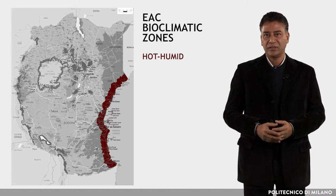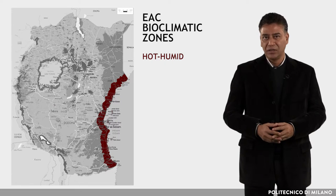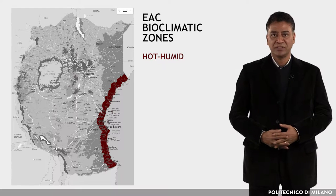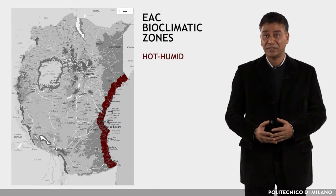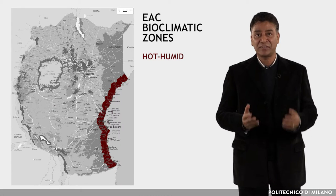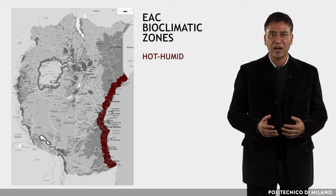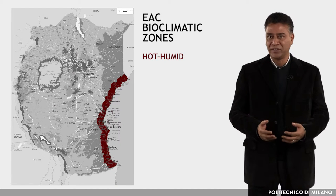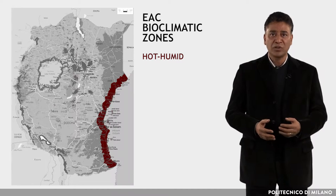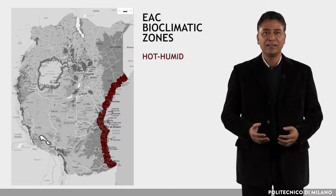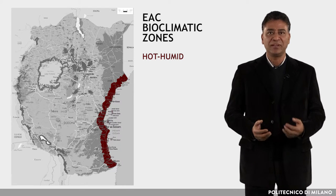The first zone is Hot Humid. This covers coastal areas, islands, and a strip of land from 20 to 100 kilometers wide along the sea. Most of the zone is less than 300 meters above sea level.